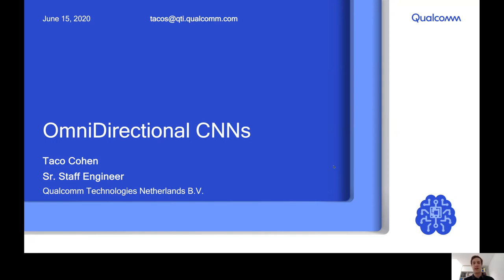Hi everyone, I'm Taco Cohen and I'm going to be talking today about omnidirectional CNNs and more generally equivariant neural nets and convolutional nets on manifolds.